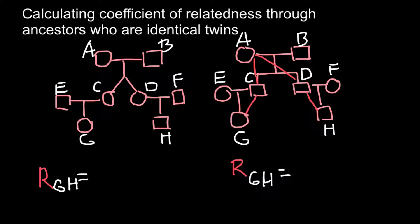Individual H got 50% from his father. Our pathway would be one half here, one half here, one half here, and one half here. In other words, one half in a power of 4. But this is not the only path that can connect individuals G and H.